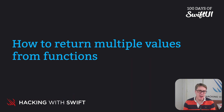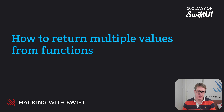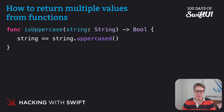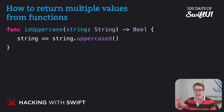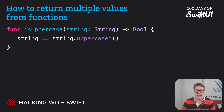When you want to return a single value from a function, you write an arrow and a data type before the opening brace. For example, we could write func isUppercase, which takes a string and returns bool. Inside there, we compare the string against string.uppercased. If it was already fully uppercase, they'll be the same and return true. Otherwise, it'll be different and return false.